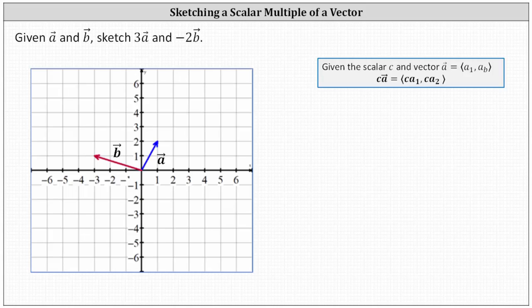We're given vectors a and b, and we're asked to sketch three times vector a and negative two times vector b. We'll take a look at these two examples by hand, and then for the third example, we'll take a look at the online graphing tool.